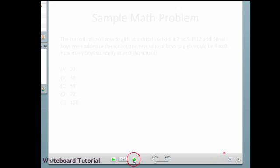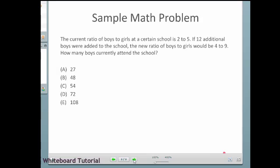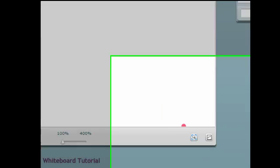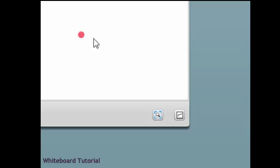So let's take a typical example. Math seems to be the use case, so here's a sample math problem. The current ratio of boys to girls at a certain school is 2 to 5. If 12 additional boys are added to the school, the new ratio of boys to girls will be 4 to 9. How many boys currently attend the school? Okay, so let's solve this problem.